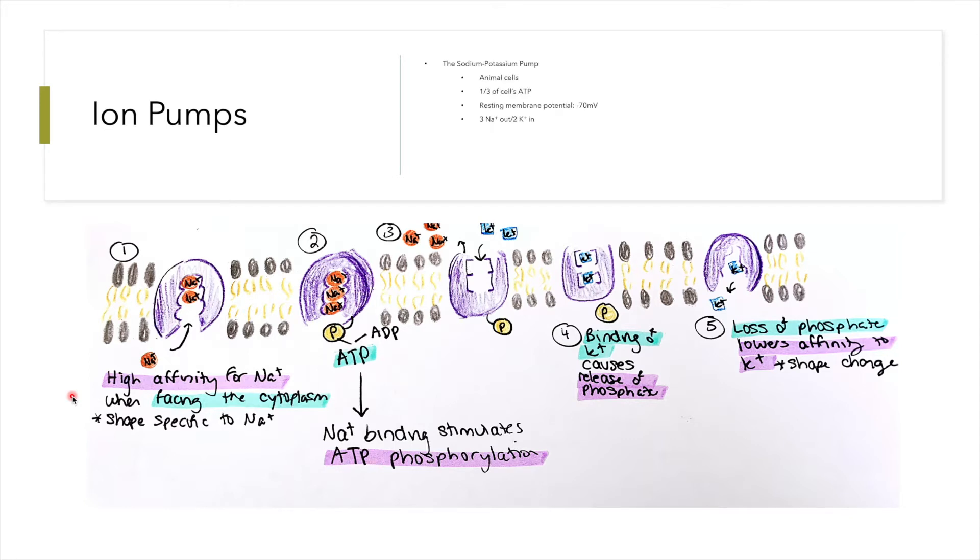The sodium-potassium pump only exists in animal cells. It requires one-third of all the cell's ATP. The membrane potential at rest is negative 70 millivolts. When this potential changes, the sodium-potassium pump is used to get back to resting membrane potential of negative 70 millivolts.